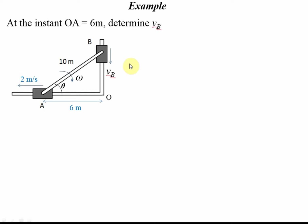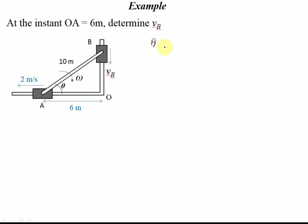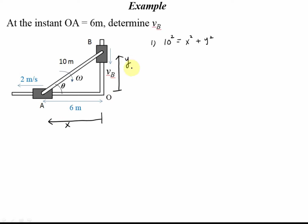Let me give another example — we saw this before. Let's find the geometric configuration. Using the Pythagorean relationship: 10 squared equals X squared plus Y squared, where X is the horizontal distance and Y is the vertical distance, and the side length is fixed. This is our geometric configuration.